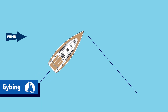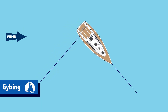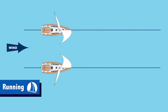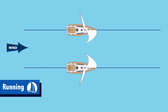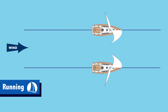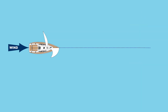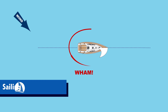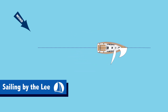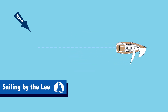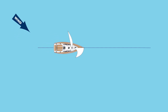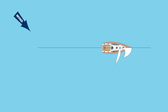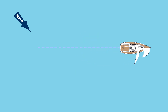Jibing is changing tacks by turning the stern through the wind. When the wind is directly astern and the sails are eased out all the way on either side of the boat, we are running. If the wind shifts to the same side of the boat that the mainsail is on, we call that sailing by the lee. This is usually done unintentionally and can be very dangerous. When running wing and wing, always keep the wind on your stern or to the side opposite the mainsail.